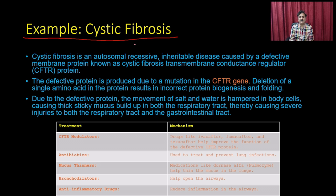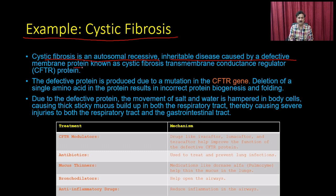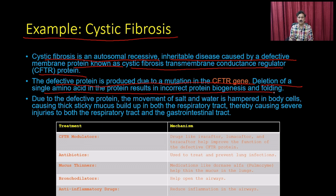There are examples of successful gene therapy treatments. One is cystic fibrosis, an autosomal recessive heritable disease caused by a defective membrane protein called cystic fibrosis transmembrane conductance regulator (CFTR). The defective protein results from a mutation in the CFTR gene. Deletion of a single amino acid results in incorrect protein biosynthesis and folding, hampering the movement of salt and water in body cells.